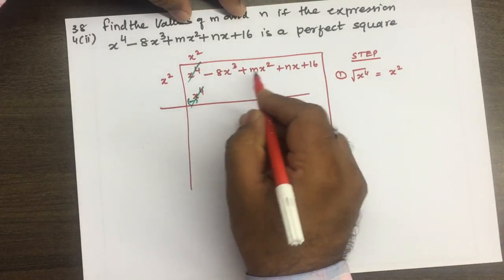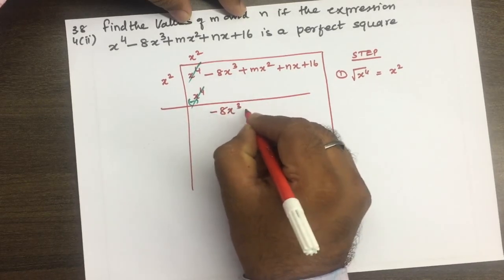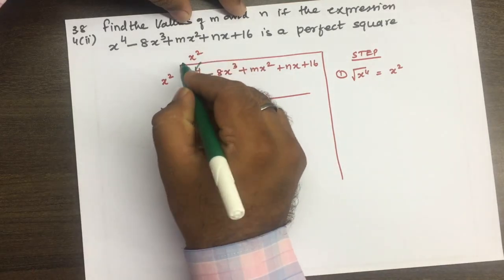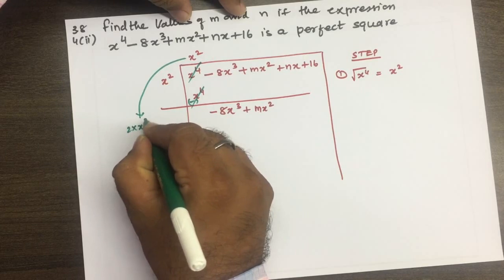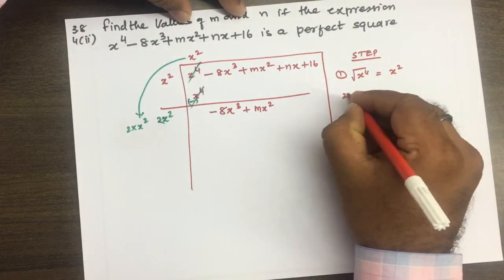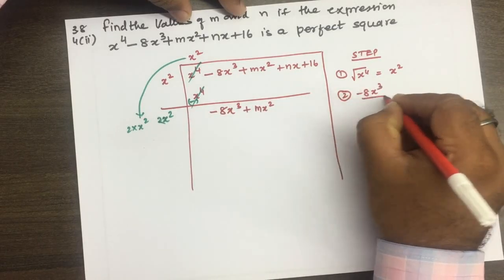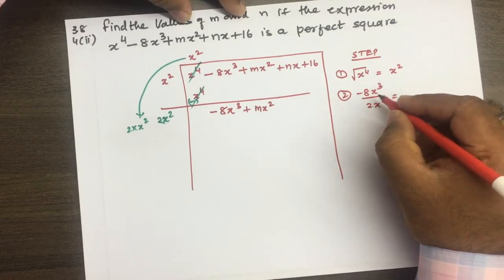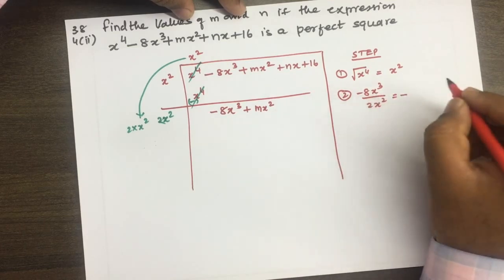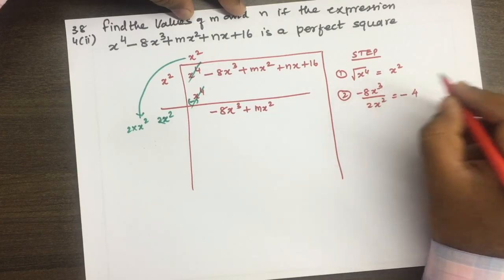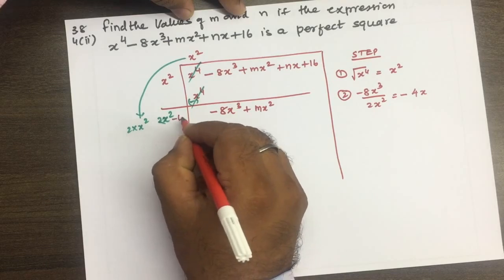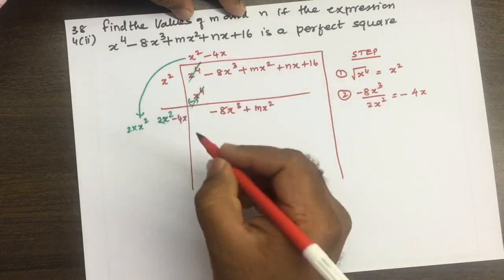Negative term को cancel करना है, next two terms को एक साथ नीचे लाना होगा: minus 8x cube plus mx square. ऊपर जो x square हमने लिया है उसको step 2 में 2 से multiply करके 2x square लिखना है। Step 2 में first term को 2x square से divide करना होगा: minus 8x cube by 2x square। Negative sign है इसलिए minus लिखेंगे, minus 4x को 2x square के पास में लिखेंगे और ऊपर भी minus 4x लिखना होगा।